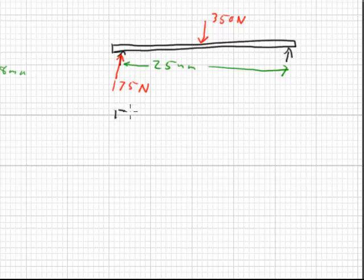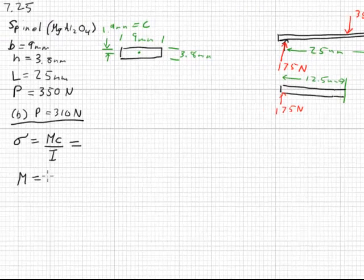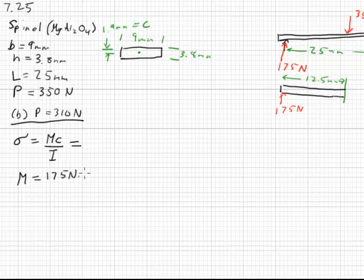The maximum bending moment occurs right in the middle. And so we have a maximum bending moment of 175 newtons times 12.5 millimeters, and that comes out to 2188 newton-millimeters.